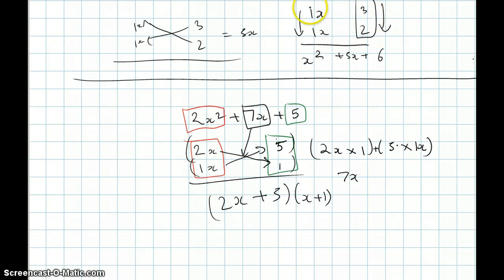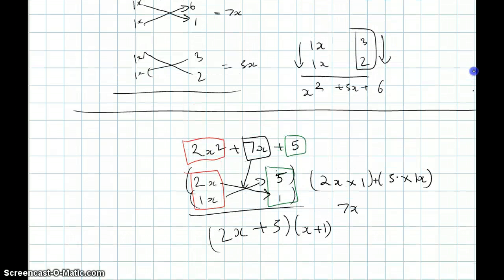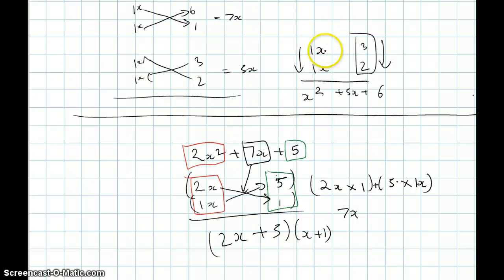So, our equation would then be 2x plus 5 and x plus 1. And for this one, I forgot to mention this, but for this one, we have 1x and 3 and 1x and 2. We basically group the top one and the bottom one like that. See what I did here?